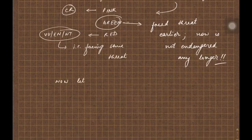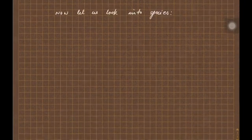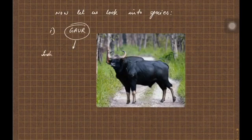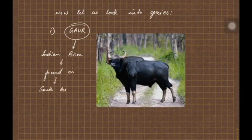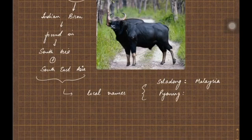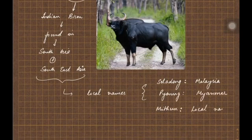Now let us look into some species which were in news this last year. The first species is Gaur. Gaur is nothing but an Indian bison found in countries like India, South Asia, and Southeast Asian countries. The local names of Gaur are Seladang in Malaysia, Pyong in Myanmar, and Mithun, which is a local name of domesticated bison.